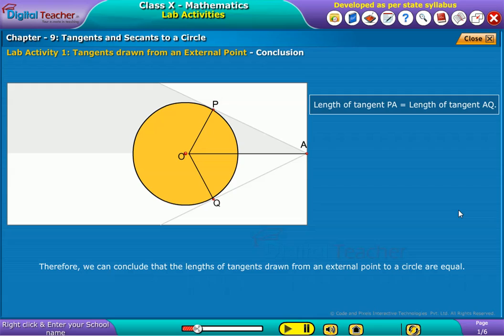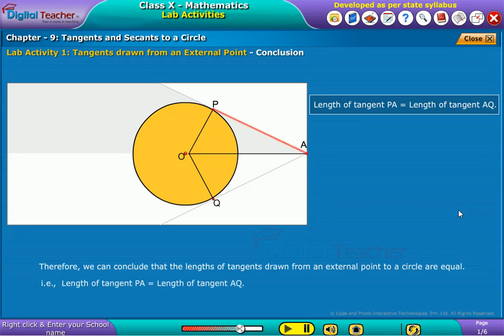Therefore, we can conclude that the lengths of tangents drawn from an external point to a circle are equal. That is, length of tangent PA is equal to length of tangent AQ.